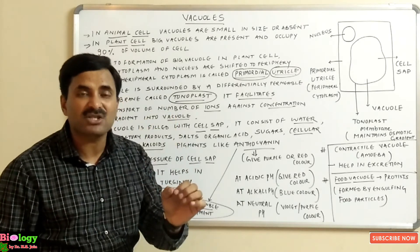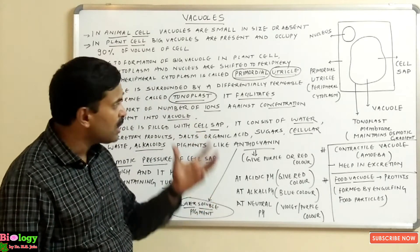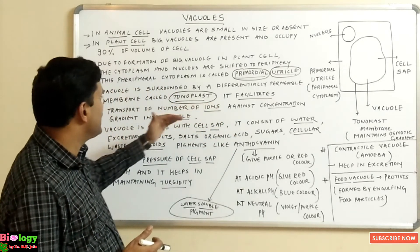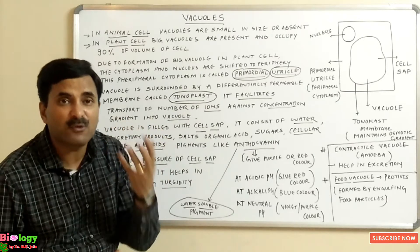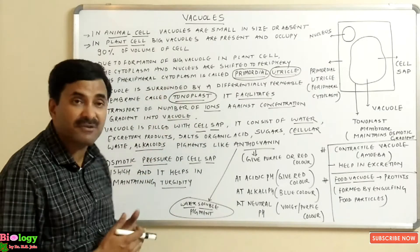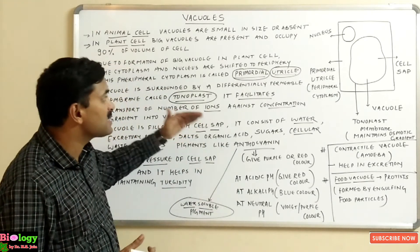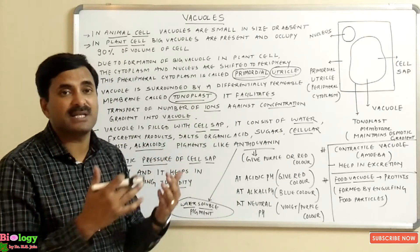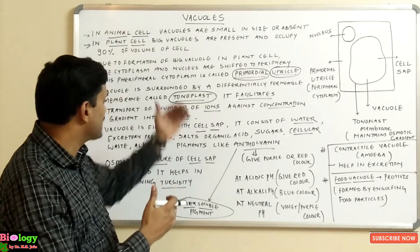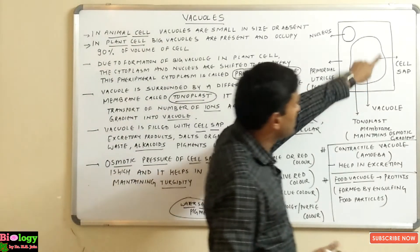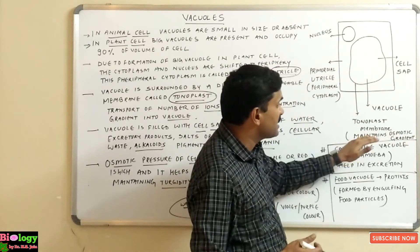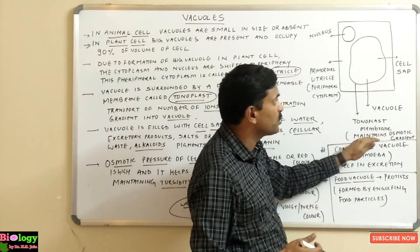The role of the tonoplast membrane is that it facilitates the transport of a number of ions against the concentration gradient into the vacuole. The vacuole is surrounded by the tonoplast membrane, which is a differentially permeable membrane important for maintaining the osmotic gradient.